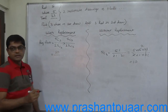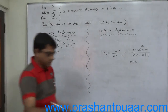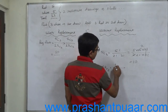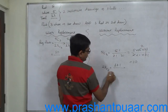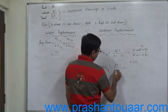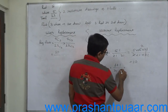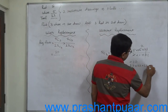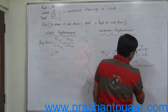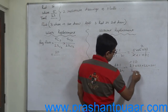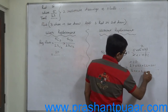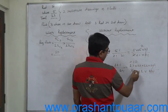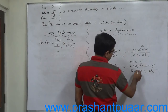10 divided by 13C3 — what is 13C3? 13C3 is 13 factorial upon 3 factorial into 10 factorial, which gives 13 into 12 into 11 into 10 factorial divided by 3 into 2 into 1 into 10 factorial. The 10 factorial cancels, giving 13 into 12 into 11 divided by 6, which equals 286.